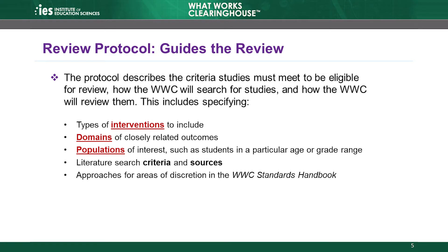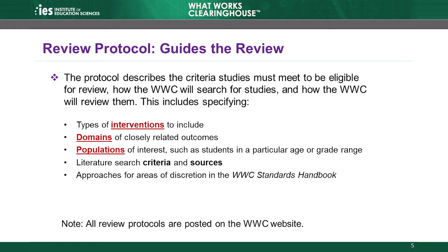Finally, the protocol specifies key details about how the WWC will review those studies, including approaches for any areas of discretion for topic areas provided in the WWC Standards Handbook. Such areas might include whether the reviews use an optimistic or pessimistic attrition threshold, and the characteristics that studies may use to satisfy the baseline equivalence requirement. All review protocols are posted on the WWC website. Visit the Resources section on the online training page to find a link to all WWC review protocols.